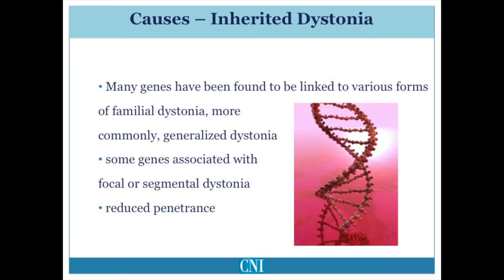More recently, two or three genes have been discovered to cause focal or segmental cervical or cranio-cervical segmental dystonia. Most of the dystonia genes exhibit what is called reduced penetrance. This means that even if one harbors a genetic mutation, one may never develop symptoms. In general, only about 30-40% of individuals who have mutations in the various dystonia genes ever develop symptoms of dystonia during their life.